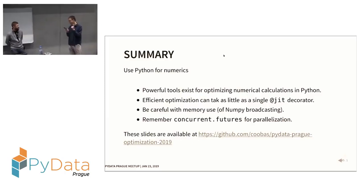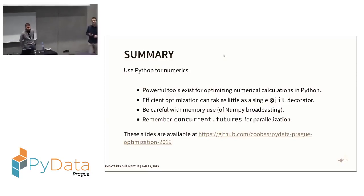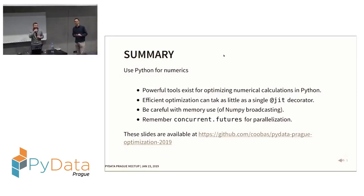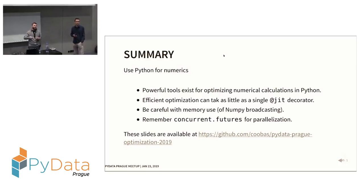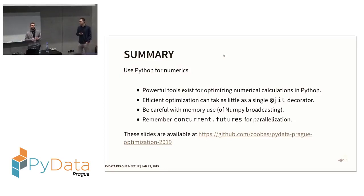In the Q&A, a question about the Dask call graph visualization noted similarities to other tools. The speaker confirmed that many tools construct a call graph and execute it on an engine with workers — Spark does something similar. TensorFlow is different in that it emphasizes tensor algebra in the graph nodes, whereas Dask also allows arbitrary Python functions.